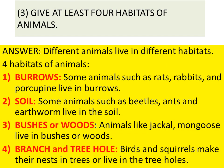Number 3: Give at least 4 habitats of animals. Answer: Different animals live in different habitats. Four habitats of animals are: Number 1, Burrows — some animals such as rats, rabbits, and porcupine live in burrows. Number 2, Soil — some animals such as beetles, ants, and earthworm live in the soil.